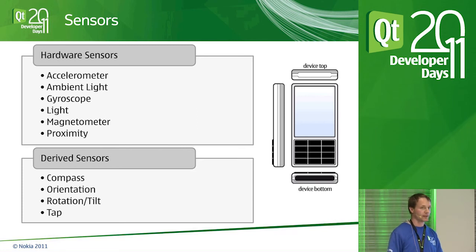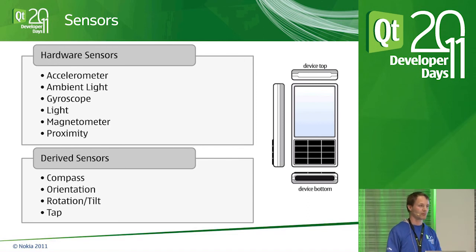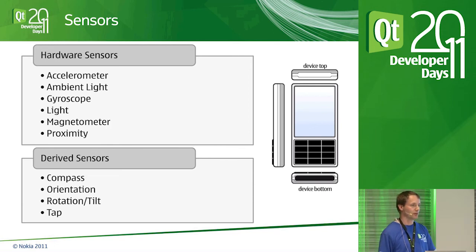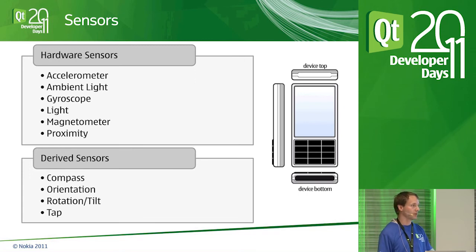Another interesting use case: if the phone is stationary, do you really need to keep GPS running? A GPS sensor consumes a lot of battery. What you might do is turn the GPS off and turn on the accelerometer, which has much lower power consumption. As long as the accelerometer detects no movement, you don't need to turn GPS on. Idle detection plays a role in optimizing power consumption.